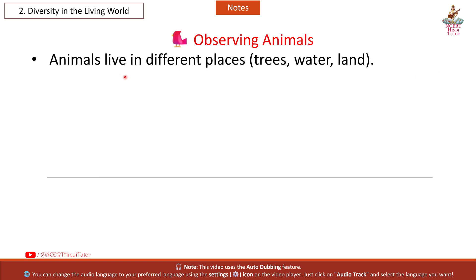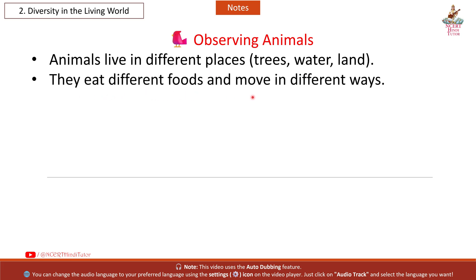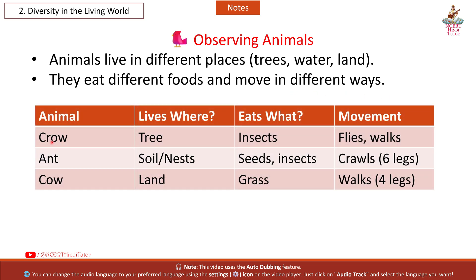Observing Animals: Animals live in different places — trees, water, land. They eat different foods and move in different ways. Crow: lives in trees, eats insects, movement: flies and walks. Ant: lives in soil nest, eats seeds and insects, movement: crawls on six legs. Cow: lives on land, eats grass, movement: walks on four legs.